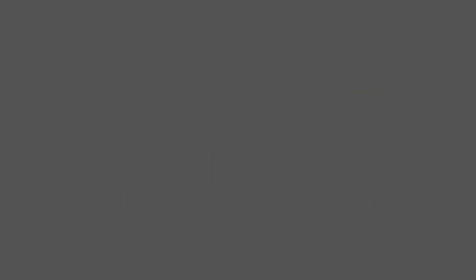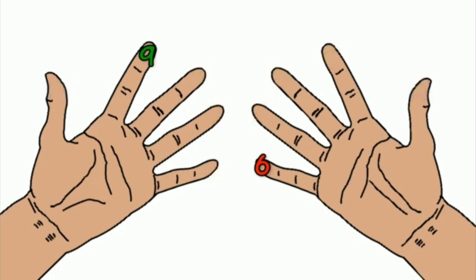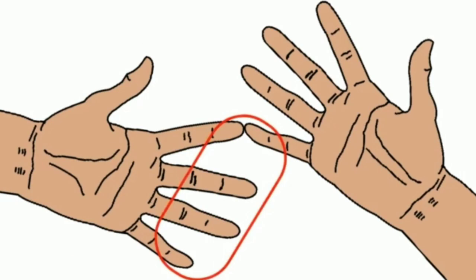Now let us talk about remembering the table of 9. For this, you have to take the fingers of both hands and mark them as 6, 7, 8, 9, 10. I have told you this method earlier as well. After marking, take an example — suppose you want to find out 9 times 6. See the finger on which 9 is written and the finger on which 6 is written, and join both fingers. As soon as you join the fingers, the number of fingers on the left becomes 1, 2, 3, 4, 5 — that is 5.